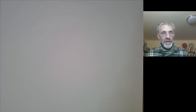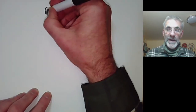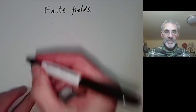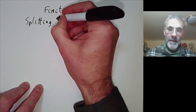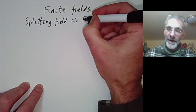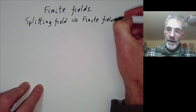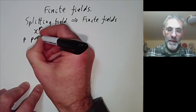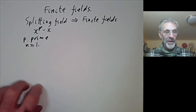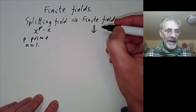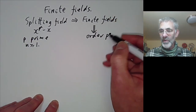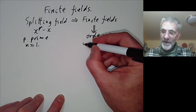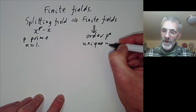This lecture is part of an online graduate course on Galois theory and will be about finite fields. We're going to use splitting fields discussed earlier to classify finite fields. We'll use the polynomial x to the p to the n minus x, where p is prime and n is an integer ≥ 1. The classification shows finite fields all have order p to the n, and for each prime power p to the n there is a unique finite field up to isomorphism.